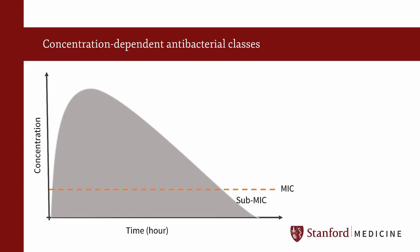The three most common PK/PD indices used to predict drug response are: one, ratio of maximum free drug concentration to MIC; two, the duration of time where free drug concentration remains above the MIC; and three, the ratio of free area under the concentration-time curve to the MIC.